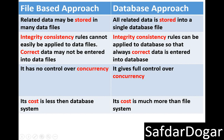In the file-based approach, related data may be stored in many different data files — the same data is stored in many places. In the database approach, all related data is stored in a single database. For example, if you have a college database, whatever data there is, it is stored in one database. Additionally, integrity and consistency rules cannot easily be applied to data files, and correct data may not be entered. But in the database approach, integrity and consistency rules can be applied so that correct data is always entered.